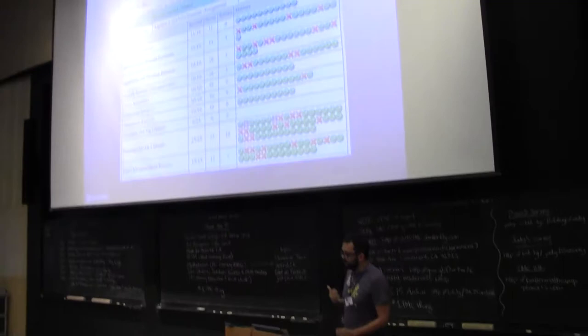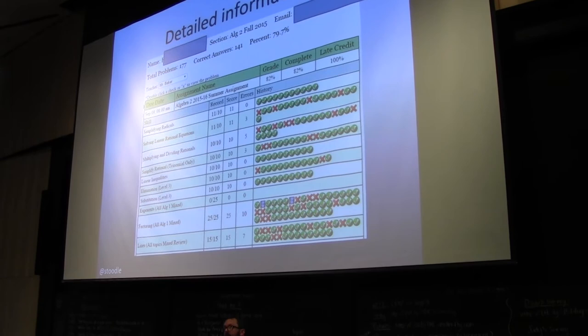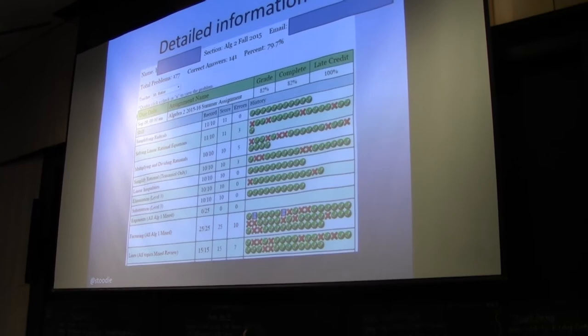The other thing it shows you is if I go into a student's, this is from our summer assignment. If I go into a student's page, I can see exactly how many problems they've done for each one. I can see how many problems they've gotten wrong for each section. So, each little X is a problem. And what's great is I can click on those little check marks or the X's and actually see what their answer was for that problem. So, I can go in and see what they're doing wrong.